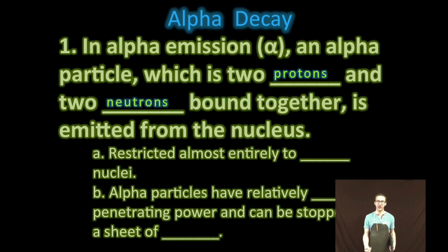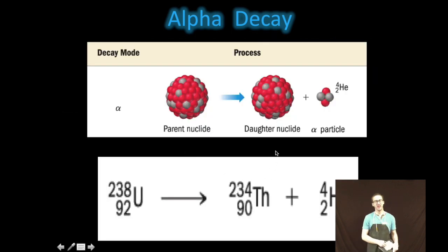Our first type of radioactive decay that you want to be comfortable with is called alpha decay. In alpha decay, an alpha particle, which is two protons and two neutrons bound together, is emitted from the nucleus. This type of decay is restricted almost entirely to very heavy nuclei, and alpha particles have relatively low penetrating power and can be stopped with essentially a sheet of paper.